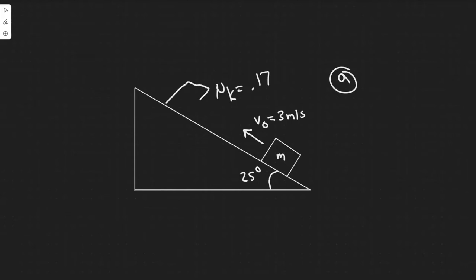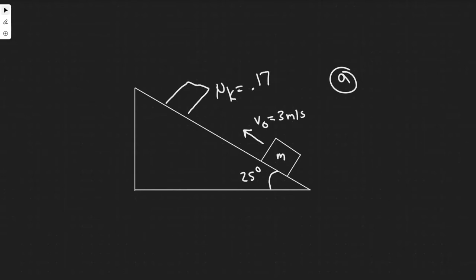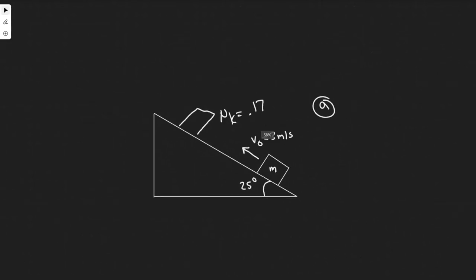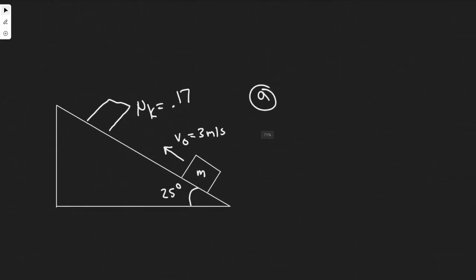So the distance — imagine this is the crate, it's going to go up and stop somewhere. We're trying to find this distance, delta x. So we're trying to find the change in position, or how far it travels up. Even though this is a force problem, we're going to use kinematics to solve for that part.